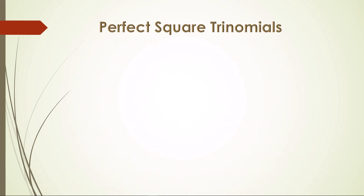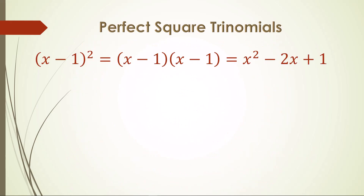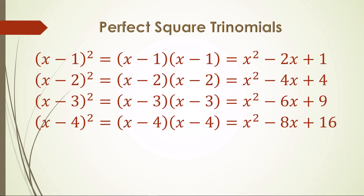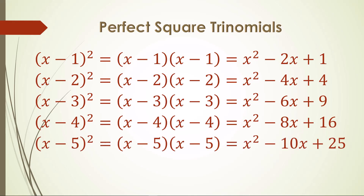The same pattern happens when each binomial has subtraction as the operator. The middle term is an x term with twice the constant value as the coefficient — negative 2x for x minus 1, negative 4x for x minus 2, and so on. The third term is the same, since a negative value squared is still positive. This is a logical extension of the pattern for positive value binomials. Study these carefully and follow this pattern in each example. Pause the video if you need to.